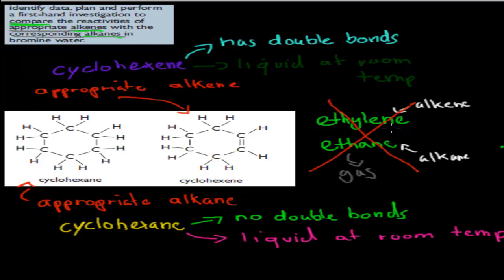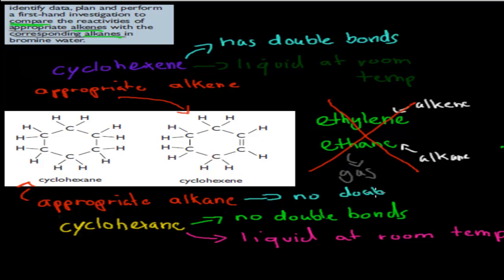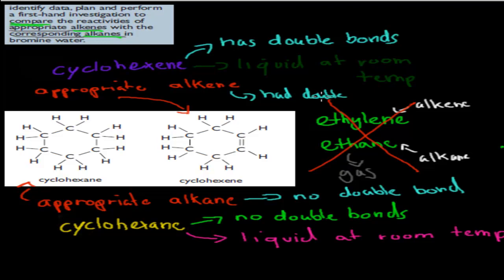But overall they're good ones to look at because they're quite important, but we can't use them for this experiment. The ones you would have looked at most likely would have been cyclohexane and cyclohexene. An alkane was something that had no double bond — usually a hydrocarbon chain, or in a circle form like cyclohexane, that had no double bond. Whereas an alkene had a double bond.